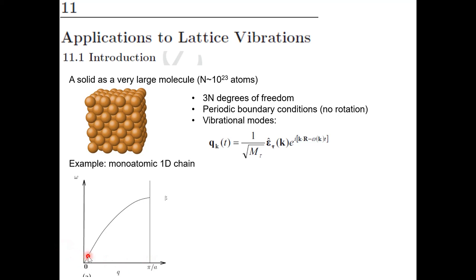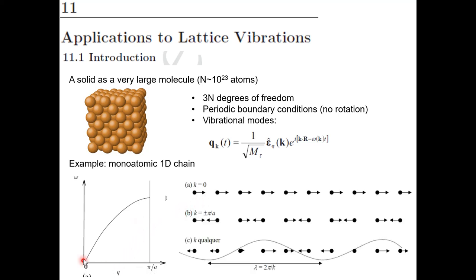The number of k-points within the Brillouin zone is precisely equal to the number of unit cells of your crystal, so I have N values corresponding to N atoms. If I consider a periodic solid in one dimension with 10 to the 23 atoms, I have a quasi-continuum of possible values of the wave vector — this is the phonon dispersion for a 1D monoatomic crystal.